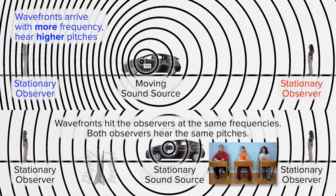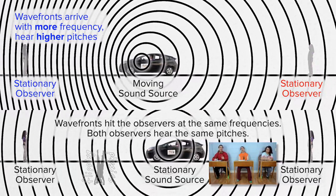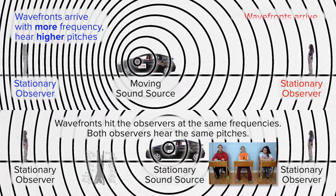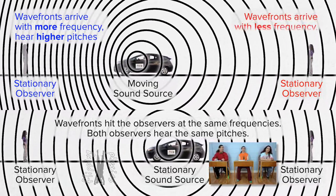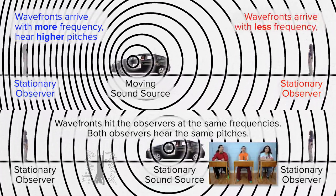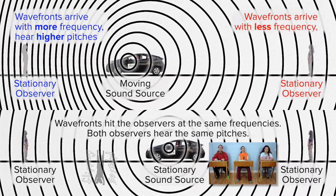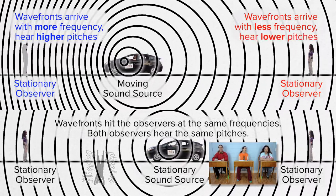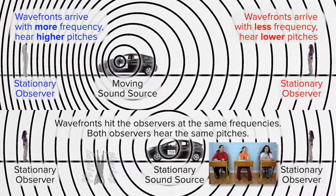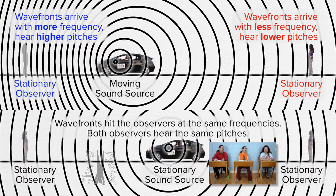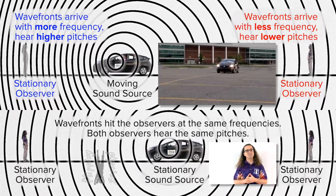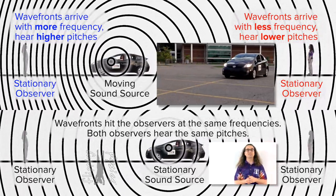And the wavefronts behind the car are farther apart, therefore the wavefronts hit that observer at lower frequencies, which is why the stationary observer hears lower pitches when the car is moving away from them. That is the Doppler effect.